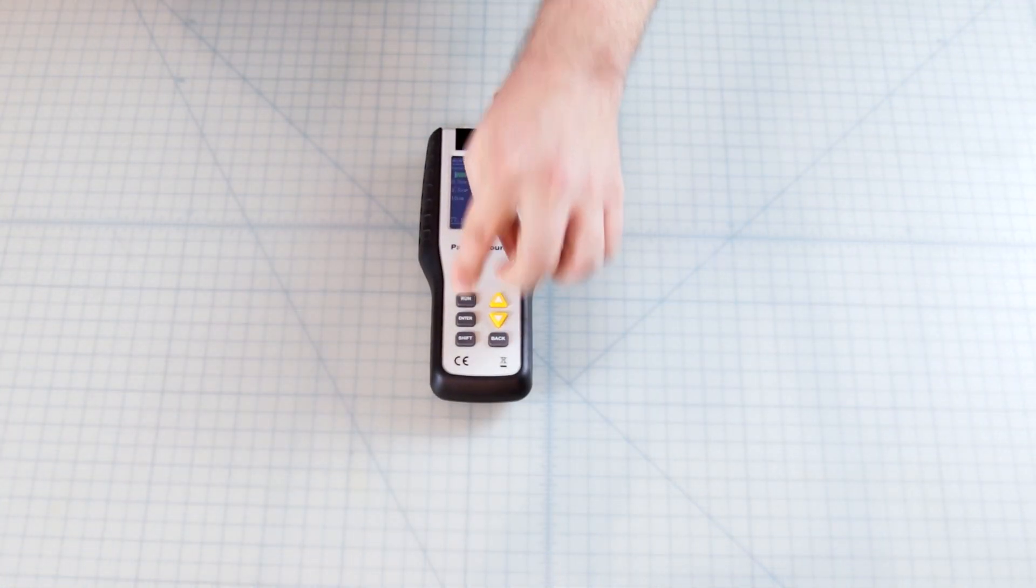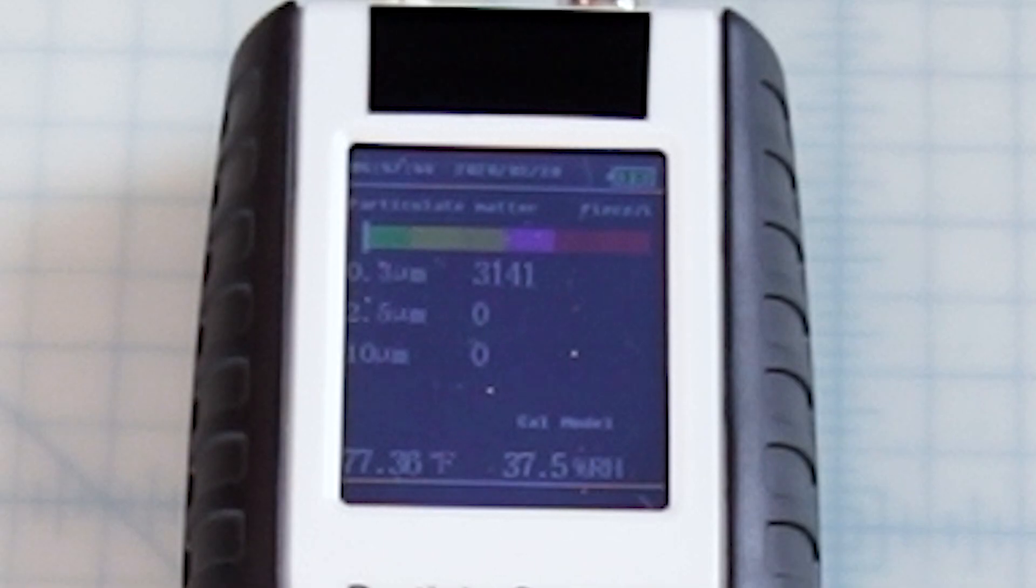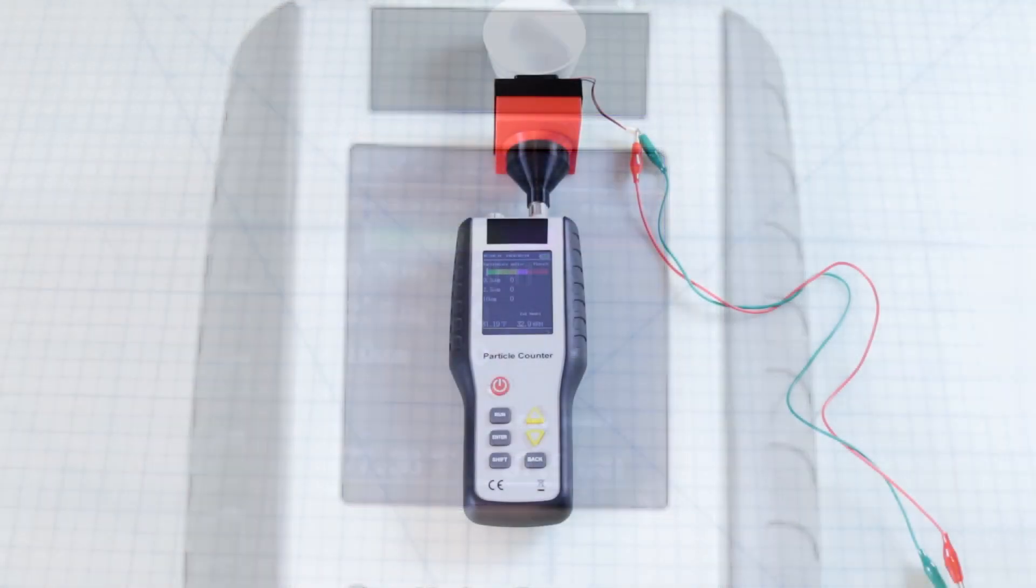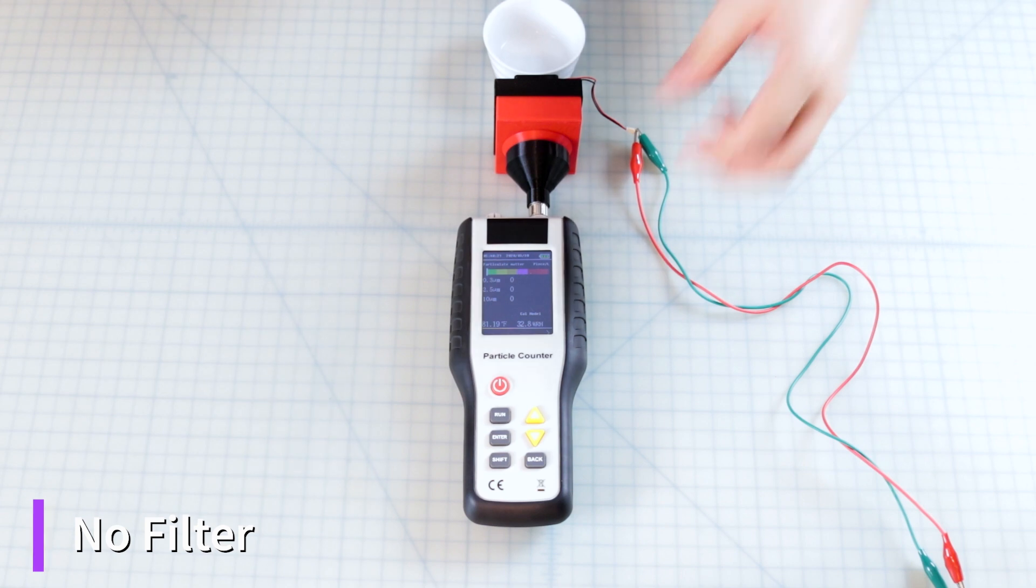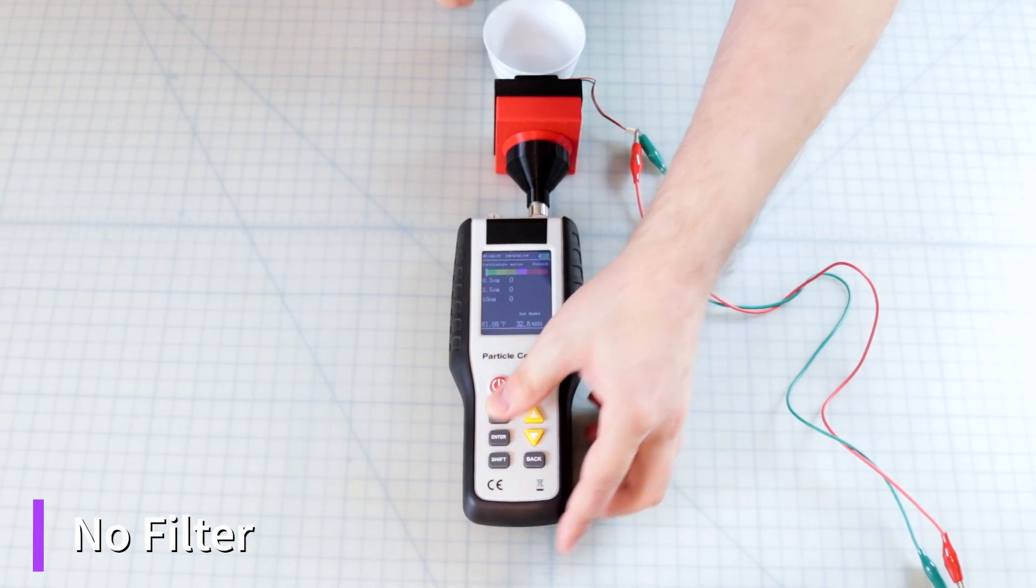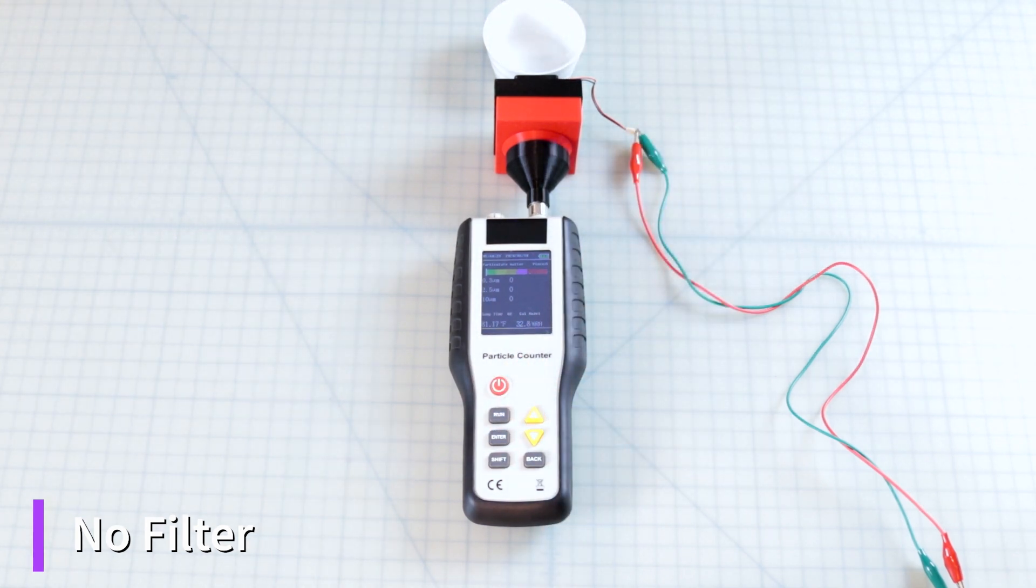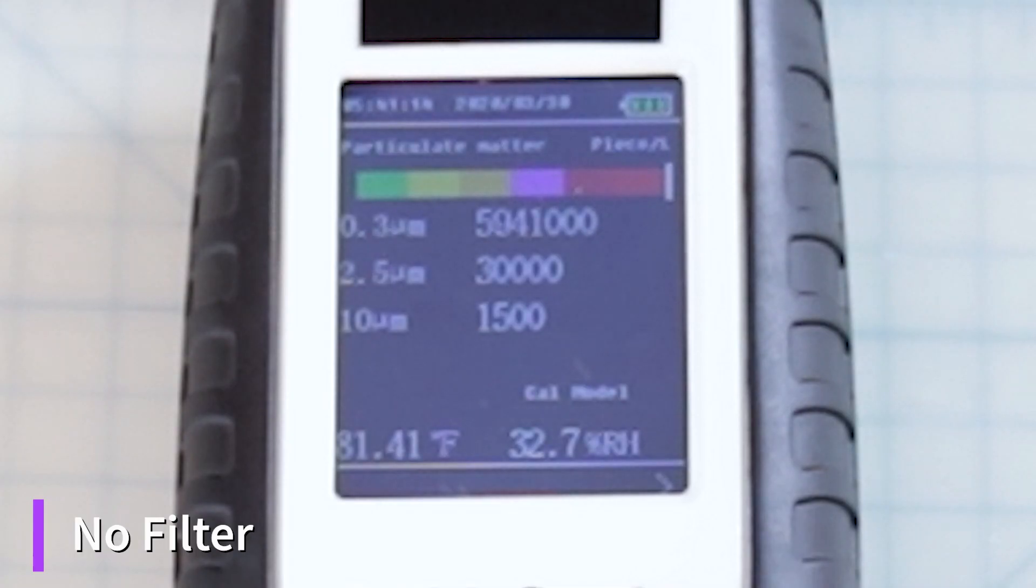We'll start with the baseline reading. As you can see, the testing environment has a baseline of 3,100 0.3 micron sized particles per liter. For the first test, we'll spray an aerosol and test for passage of particles through the empty cassette. The result is a spike of 0.3 micron sized particles to 5.9 million per liter.